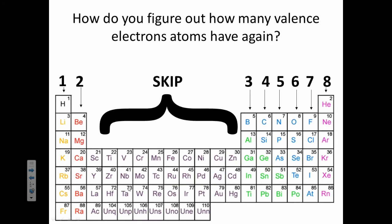How do you figure out how many valence electrons an atom has anyways? You look at the group number. Everything in group 1A has one valence electron, and so on and so forth.